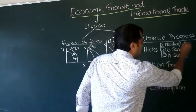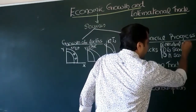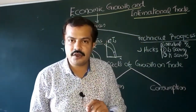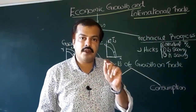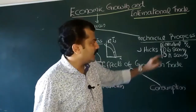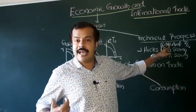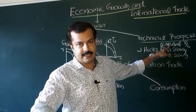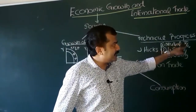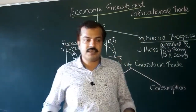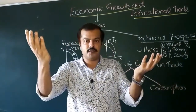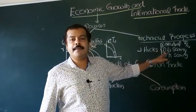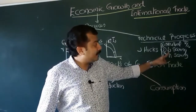Under neutral technical progress, both become equally productive and there will not be any change in the capital-labor ratio — that is, the amount of capital employed per unit of labor. When the productivity of both capital and labor increases as a result of neutral technical progress, there will not be any change in the capital-labor ratio because the productivity of both increases in the same proportion.